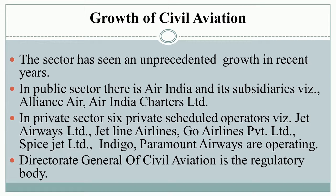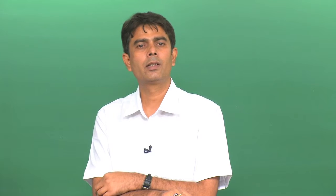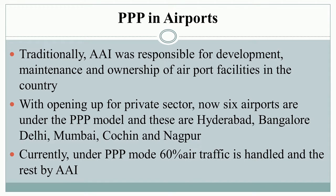The sector has seen unprecedented growth in recent years. In the public sector, there is Air India and its subsidiaries like Alliance Air and Air India Charters Limited. In the private sector, 6 private scheduled operators such as Jet Airways, Jet Lite, Go Air, SpiceJet, IndiGo, and Paramount Airways are operating. The Director General of Civil Aviation is the regulatory body. Traditionally, AAI was responsible for development, maintenance, and ownership of airport facilities. With the opening of the private sector, 6 airports are now under PPP mode: Hyderabad, Bangalore, Delhi, Mumbai, Cochin, and Nagpur. Currently, under PPP mode, 60 percent of air traffic is handled, and the rest is by the Airport Authority of India.